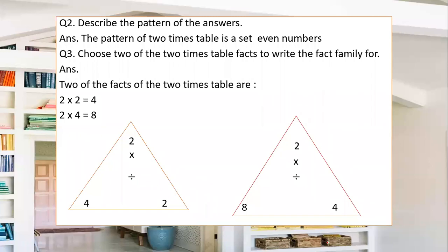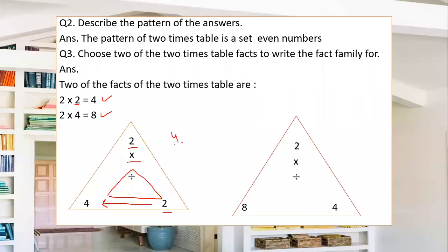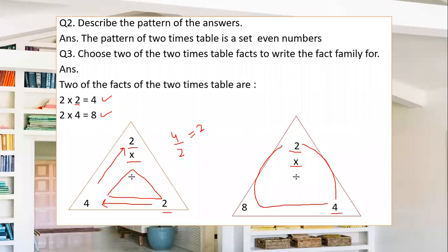I have taken 2 two times is 4 and 2 four times is 8. For the first fact, we write 2 × 2 = 4, and then 4 ÷ 2 = 2 — so a triangle is formed. Next, 2 × 4 = 8, and 8 ÷ 4 = 2. In this way a fact family is formed.